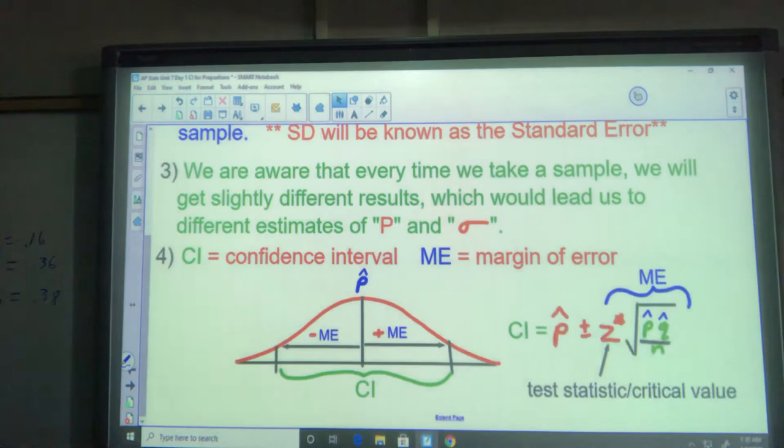Our margin of error, that portion here that we're adding, this is the standard deviation. It's how many of those standard deviations we're going to add on either side to gain a certain level of confidence. So we'll have a Z value. And this is our standard deviation calculation, but it's got P hat and Q hat in there.